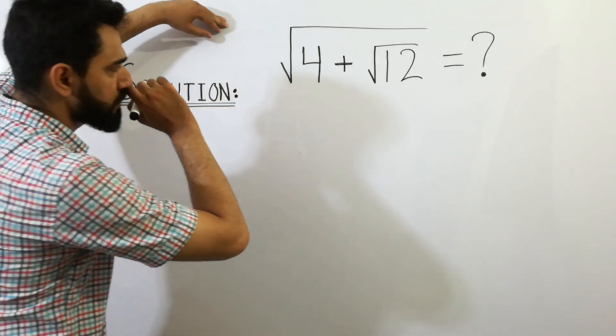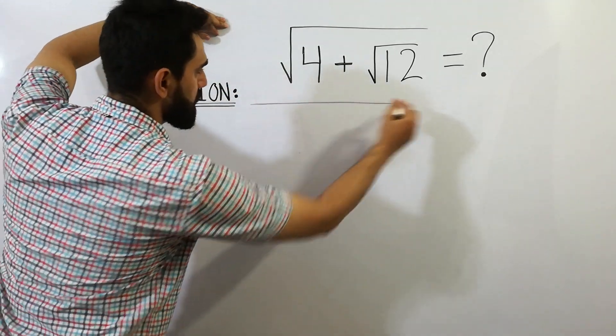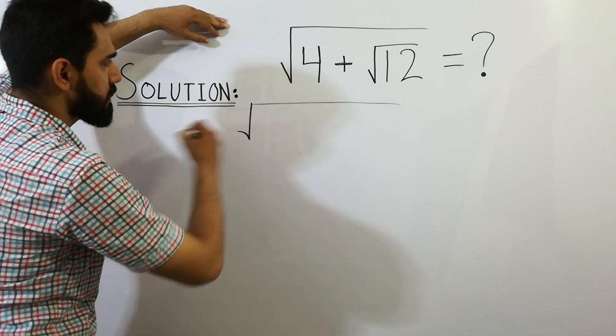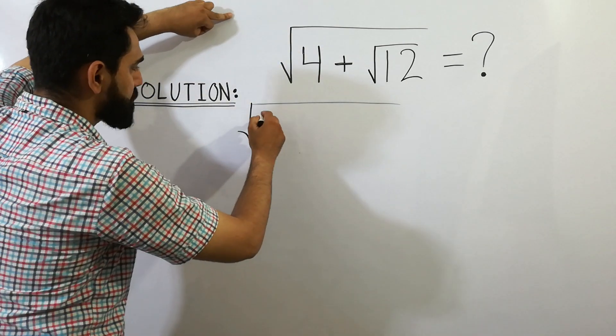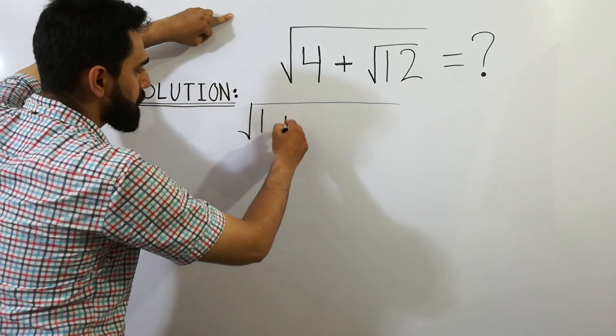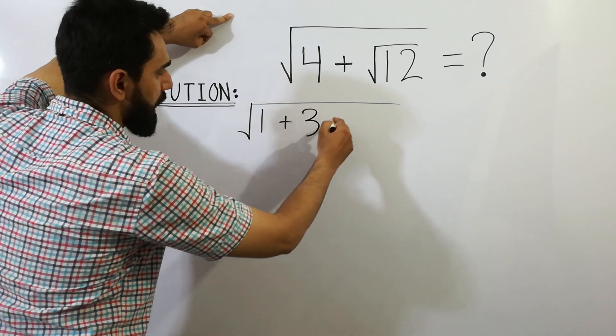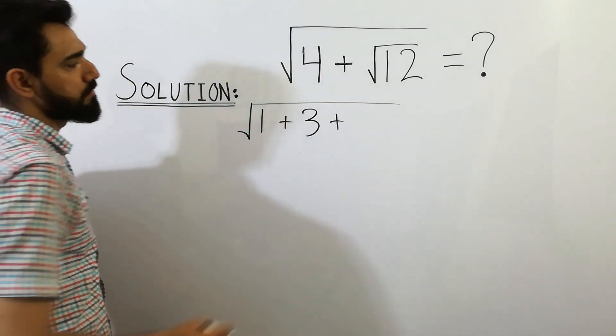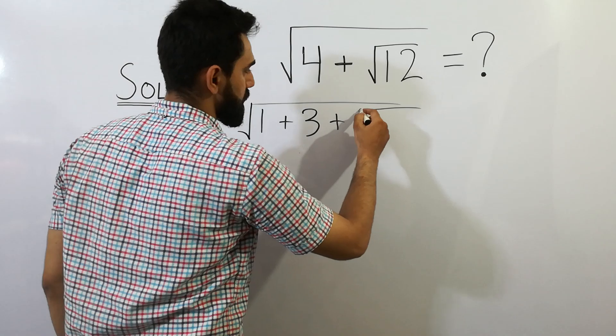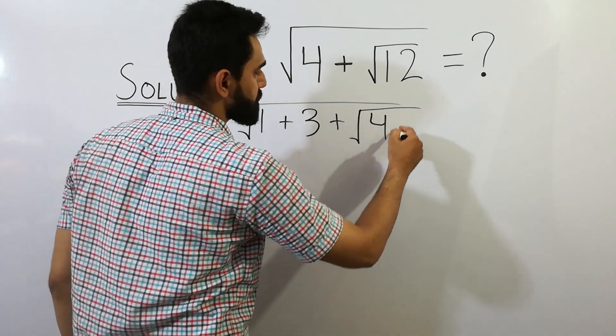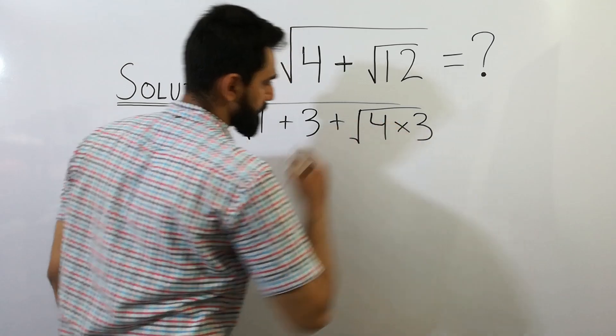It is possible to write it as 4 equals 1 plus 3, and 12 as 4 times 3. Clear?